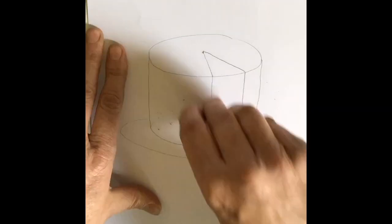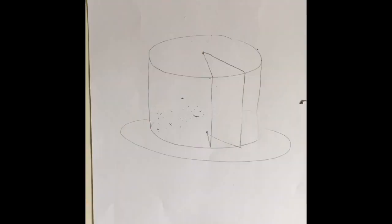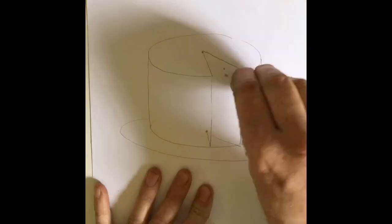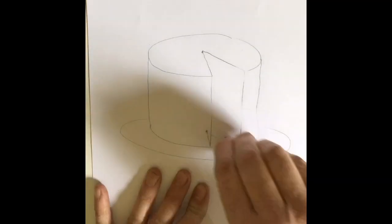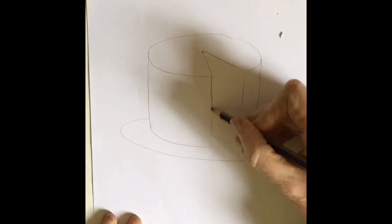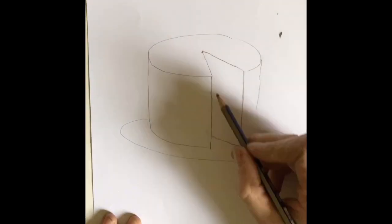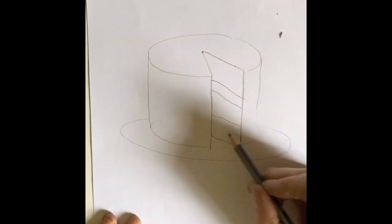Now get your rubber and rub out the back of the bottom ellipse, and you need to rub out the front of the top ellipse where the cut is. Basically just look at what I've been drawing. There we go. And go over those lines again. Remember, pause the video and stop it.